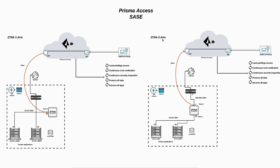On the other hand, there is another mode called ZTNA two arms. Simply, you can deploy the ZTNA Connector in the workload in Azure or any public or private cloud with two ports. Port 2 will be assigned to one subnet, and the other port will be assigned to the LAN subnet. So all traffic back and forth will go through the ZTNA Connector for two arms.